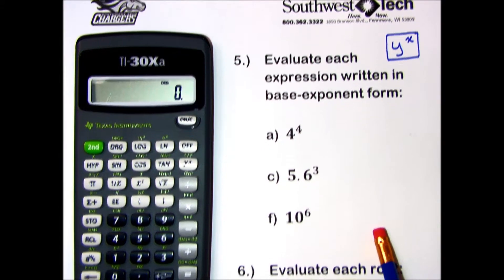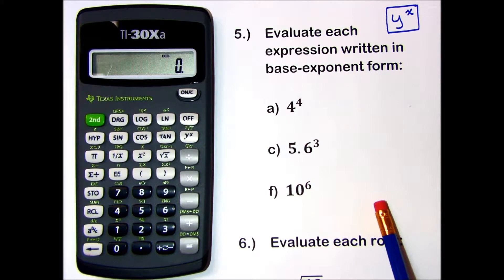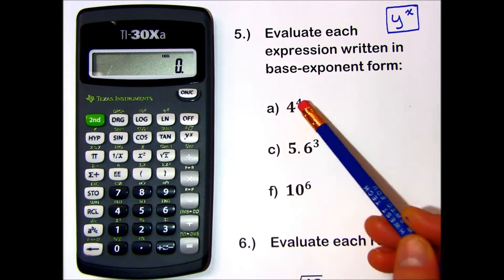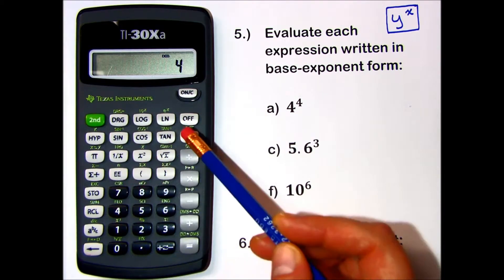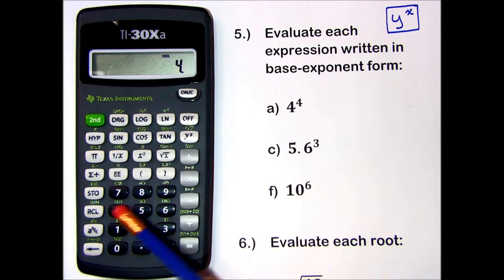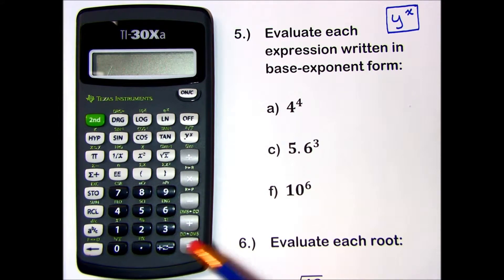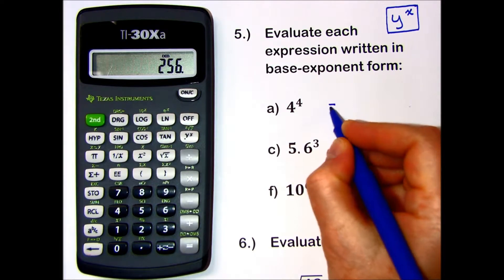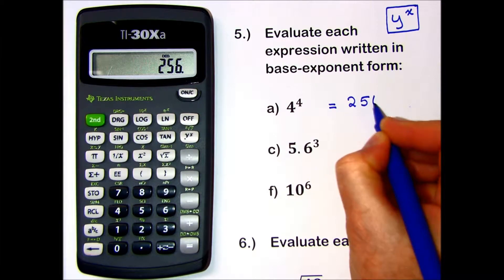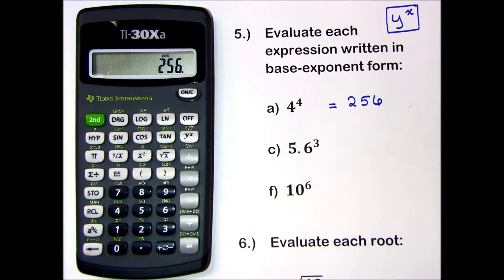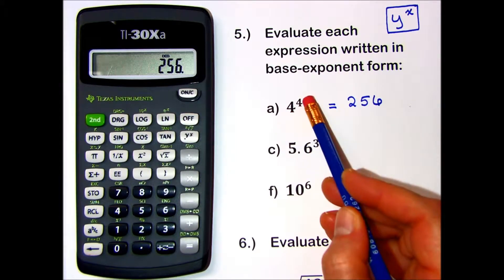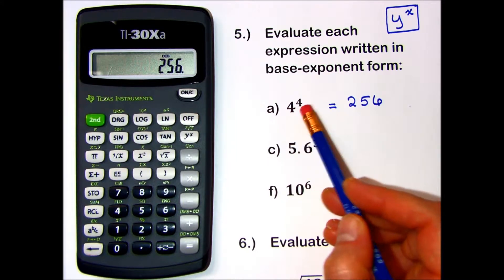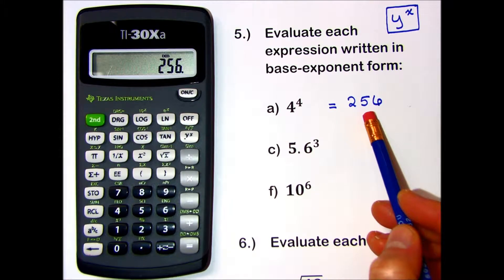Let's try a few from problem number 5 together. 4 to the 4th. On this calculator, I will enter 4 to the power of 4, press equals for my answer, and that is 256. The meaning of this exponent is 4 times itself 4 times — 4 times 4 times 4 times 4 — and we would get 256.